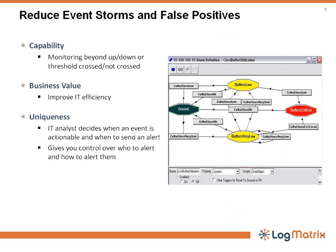NerveCenter need not send an alert when a device does not respond, and need not send an alert each time a threshold is crossed. NerveCenter can recheck status before alerting and can store and correlate events. Using conditional logic state models, you decide when an alert is actionable and when to send an alert.